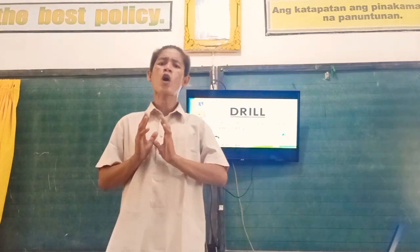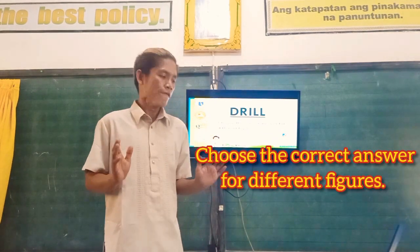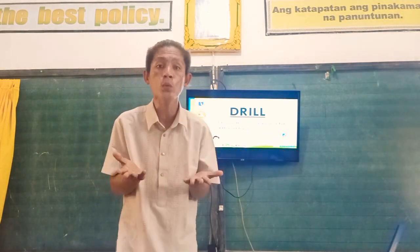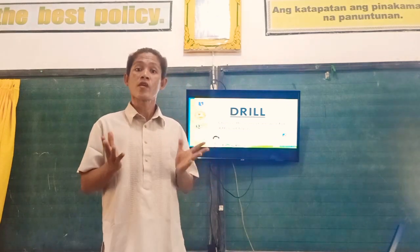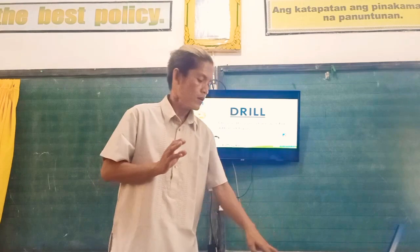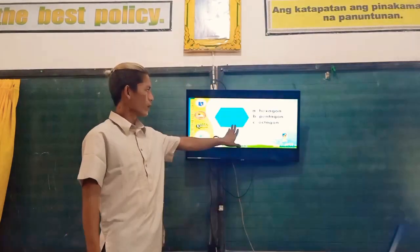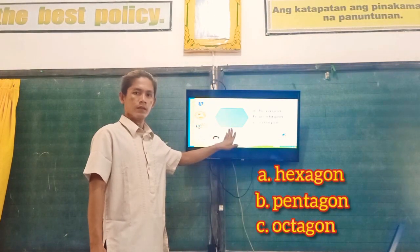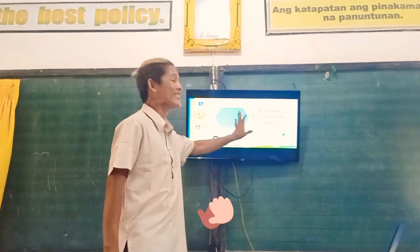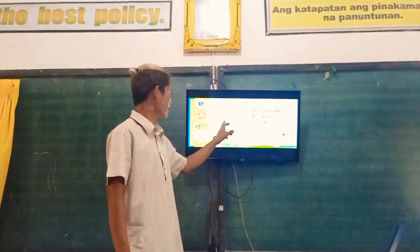Okay class, you are going to choose the correct answer from the different figures. I will show you the figures and you are going to select the correct answer. What do you think is the name of this figure? Very good. The correct answer is hexagon — Letter A, hexagon. How about this one, class?